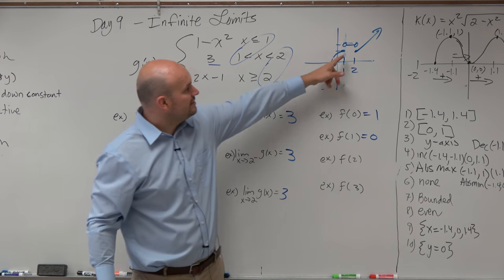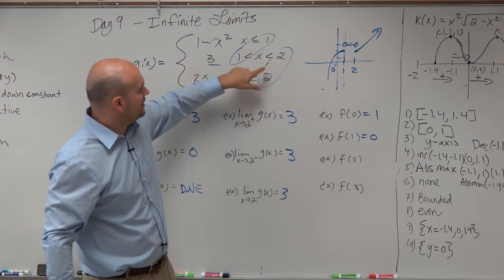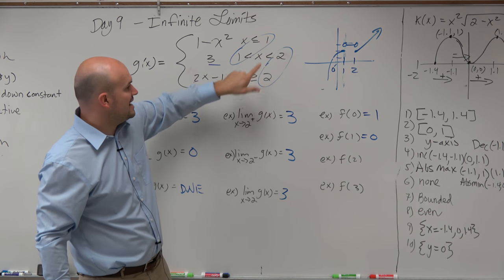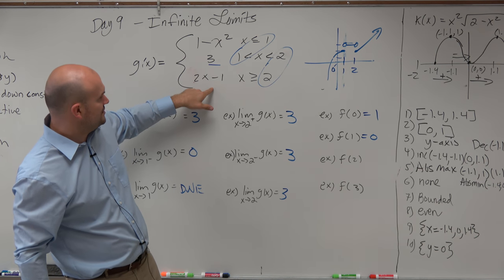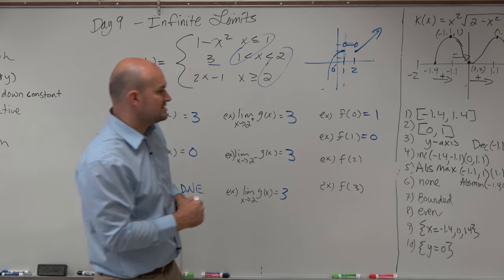So f of 2, again, could be either function. So you've got to look at them and see which one's included, which one's not. This is included. That's not included. So you use that function. So you plug in 2. 2 times 2 is 4 minus 1 is 3.